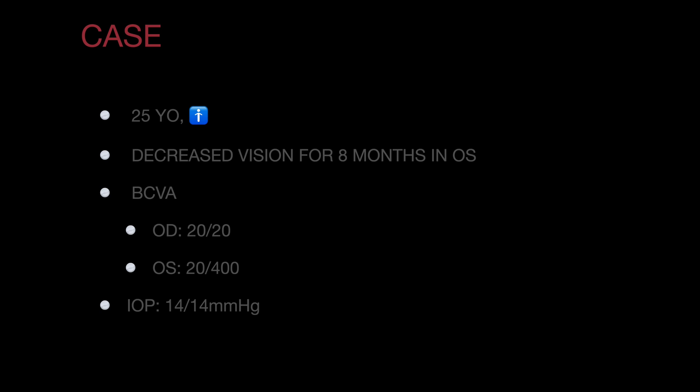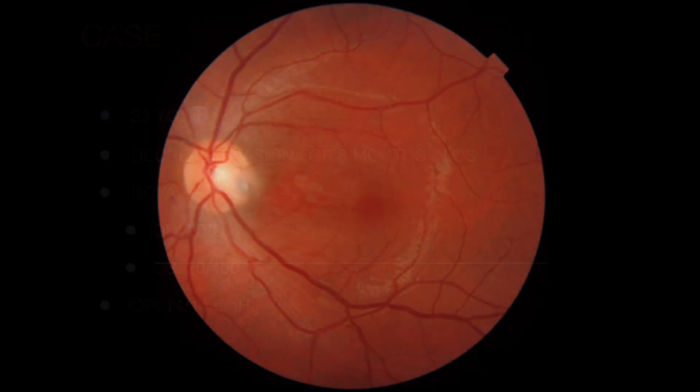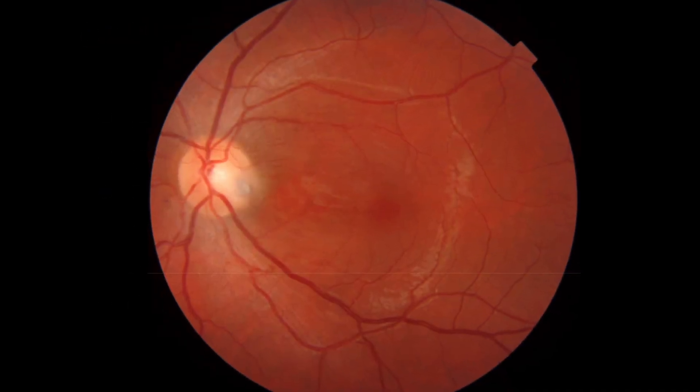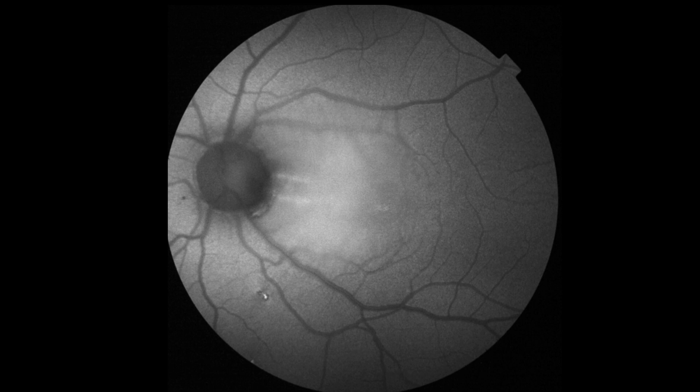The best corrected visual acuity in the right eye was 20/20 and in the left eye was 20/400. In the fundoscopy it was possible to see a gray round depression in the infratemporal region of the optic disc, associated with a serous retinal detachment involving the macula in the left eye.